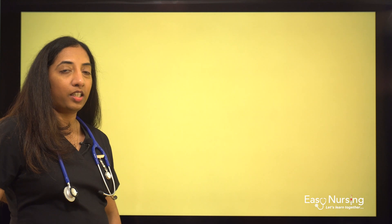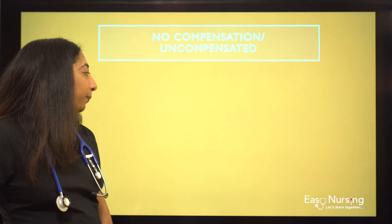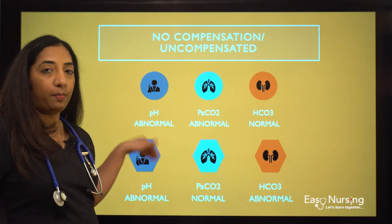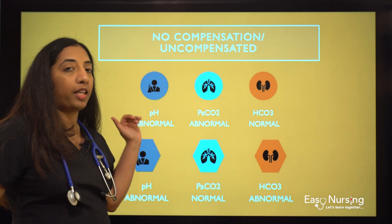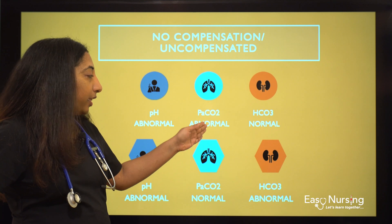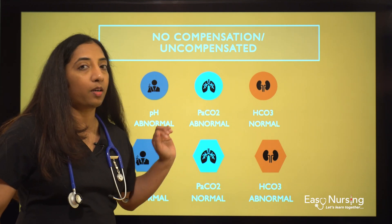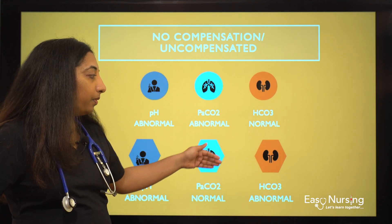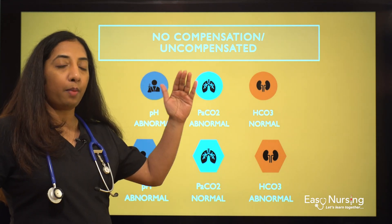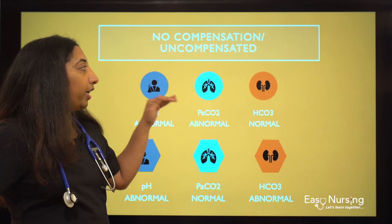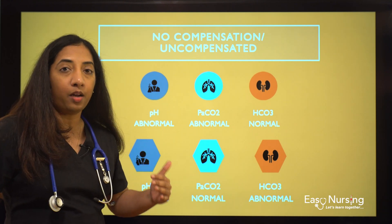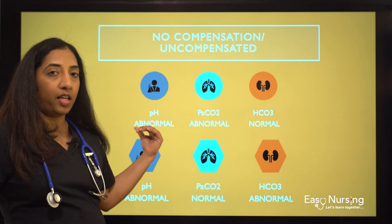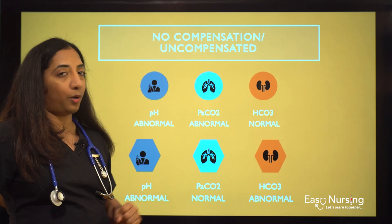For no compensation or uncompensated, we have two scenarios. In both, the pH will be abnormal. In the first scenario, PaCO2 is abnormal and bicarb is normal; in the other it's vice versa. The normal one would need to bring itself up or down to bring the pH to normal, but in this case it didn't try, couldn't, or was unable to bring that pH back. That is called non-compensation or uncompensated.